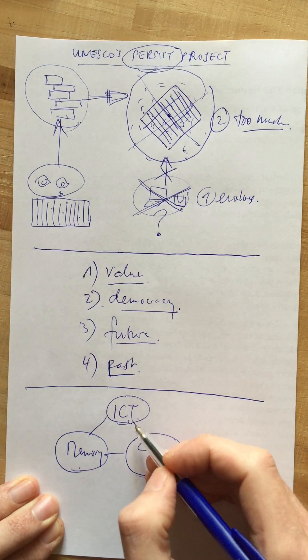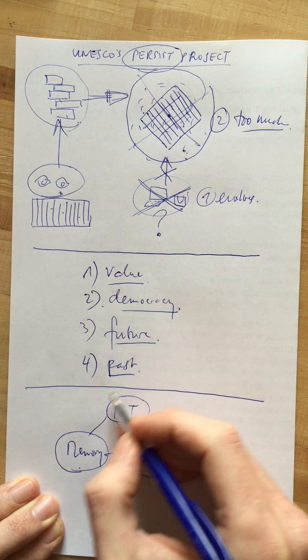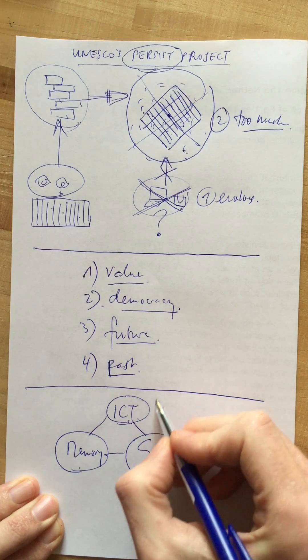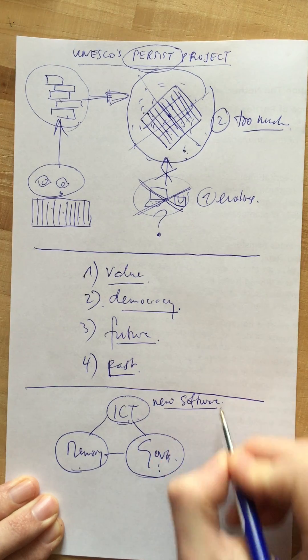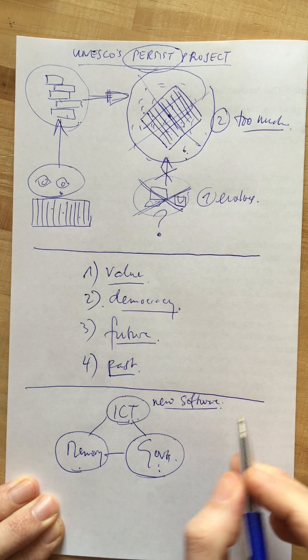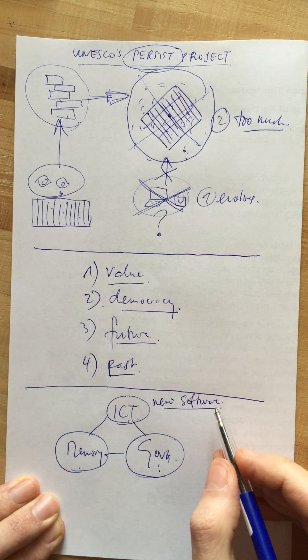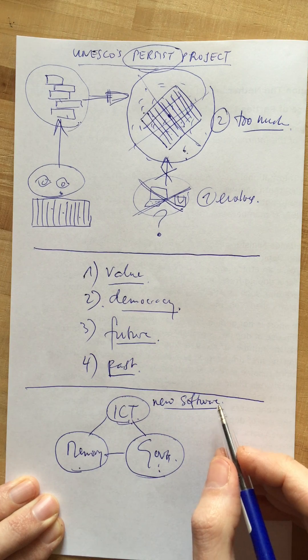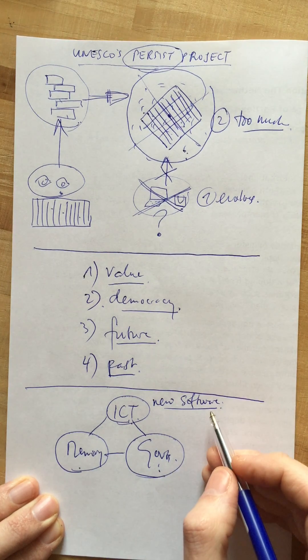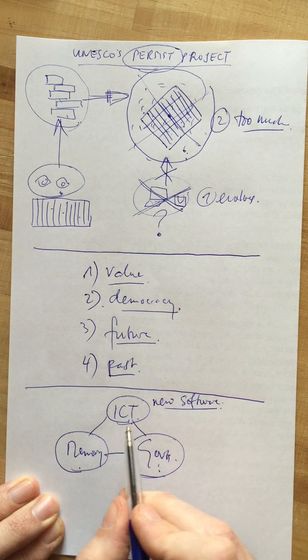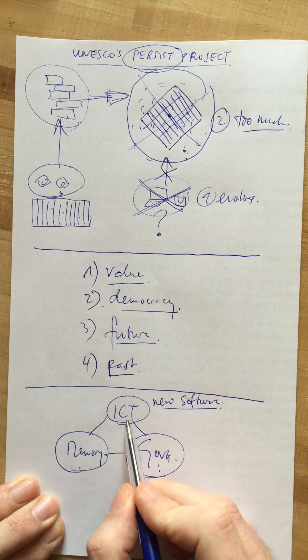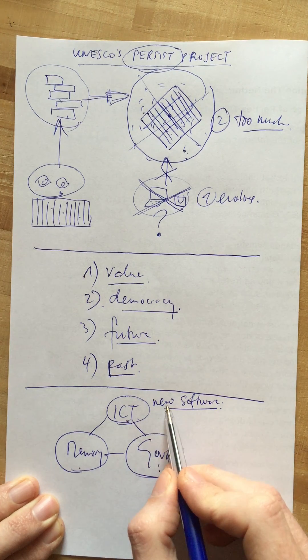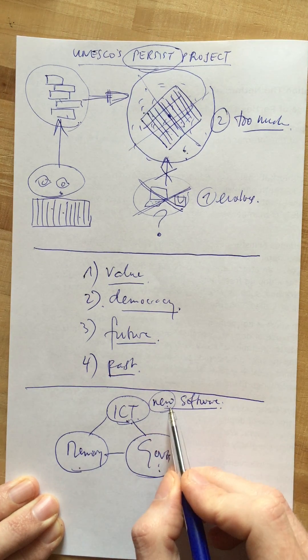Let's look at the ICT industry first. It's in their interest to produce new software all the time because that's good for business, but it's not good for digital heritage and for digital information and for our access to it. So Persist asks the ICT industry to maintain a minimum continuity between old software and new software to make it easier for memory institutions to keep digital information accessible.